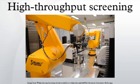High-throughput screening is a method for scientific experimentation especially used in drug discovery, relevant to the fields of biology and chemistry. Using robotics, data processing and control software, liquid handling devices, and sensitive detectors, high-throughput screening allows a researcher to quickly conduct millions of chemical, genetic, or pharmacological tests. Through this process one can rapidly identify active compounds, antibodies, or genes that modulate a particular biomolecular pathway. The results provide starting points for drug design and for understanding the interaction or role of a particular biochemical process in biology.